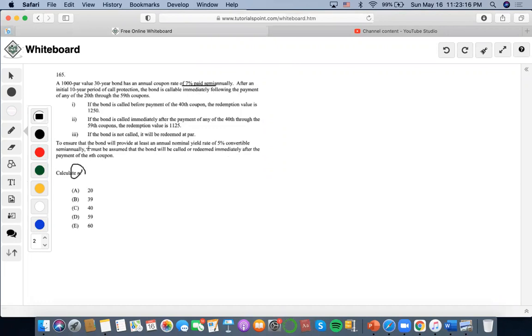Whenever we see this, where we want to ensure that the bond will provide at least an annual nominal rate, that means we want to, after computing bond pricing formulas for every scenario, always choose the one that produces the lowest price. If you pay more, then the yield rate will be higher, so we have to choose the cheapest price to pay for the bond.